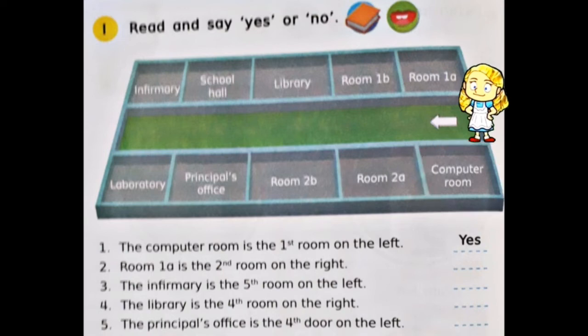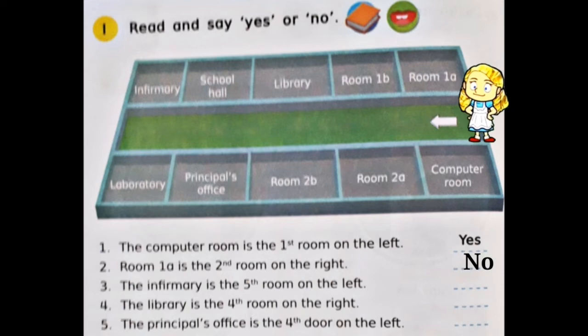Nomor dua: 'Room 1A is the second room on the right.' Artinya ruangan 1A berada di ruangan kedua sebelah kanan. Apakah betul? Jawabannya no, karena ruangan kedua sebelah kanan adalah Room 1B, bukan Room 1A. Room 1A berada di ruangan pertama sebelah kanan. So far, do you understand? Good.